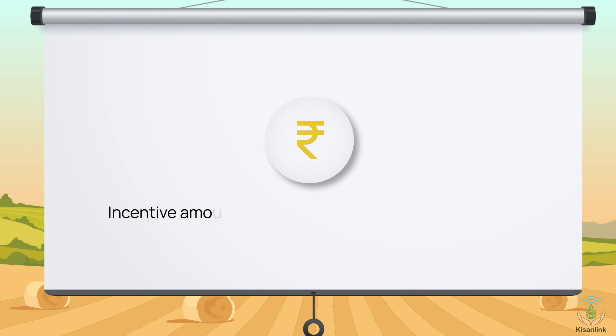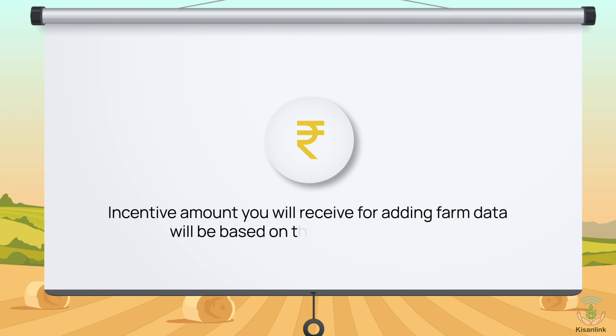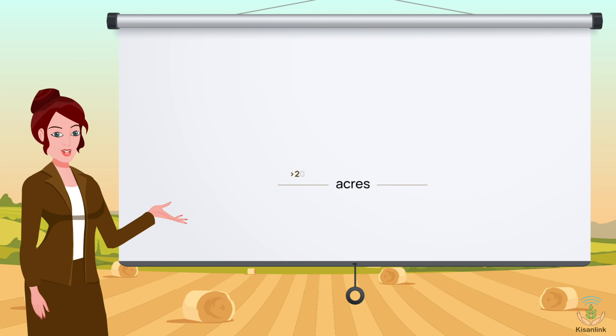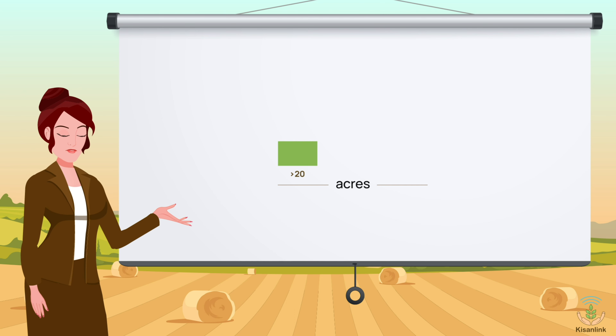The incentive amount you will receive for adding data will be based on the size of the farm. For example, if you add a farm of size more than 20 acres, you will receive 50 rupees.